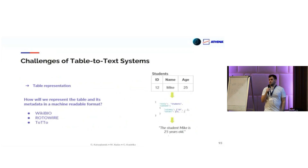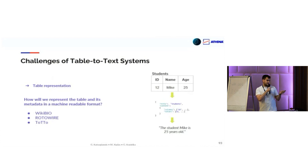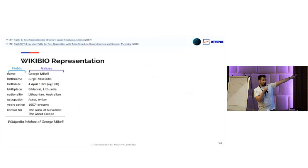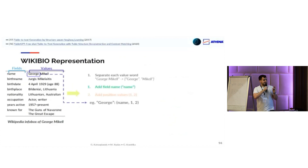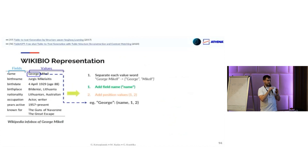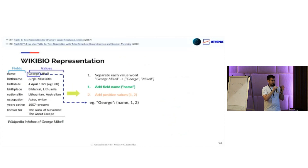How do we represent a table? The representation depends on the dataset. For WikiBio, we take each value and separate it into separate words, so 'George Michael' becomes two different tokens. We then create the embedding for each token — first we add the field name, so 'George' refers to a 'name' field, and then we add a positional encoding that has two values.